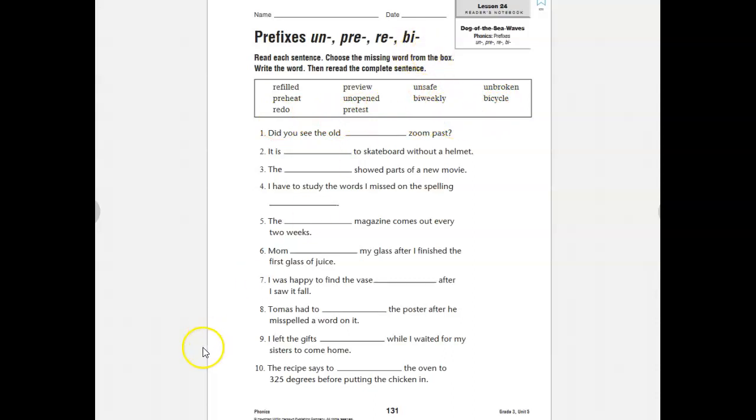And then bi means twice. So if we see words that have bi as a prefix, we know that it is something that happens or it has to do with the number two. So when we see the word biweekly, we know that means every two weeks. And then another example is the word bicycle. So we know a bicycle is a cycle that has two wheels, right?